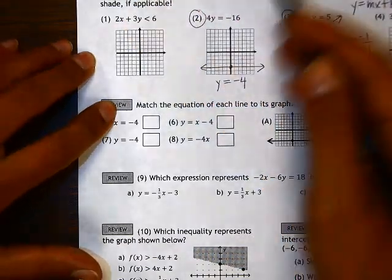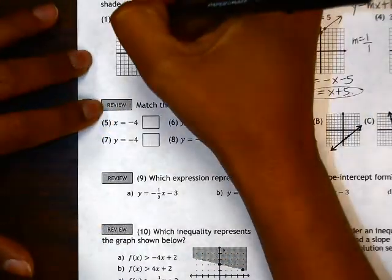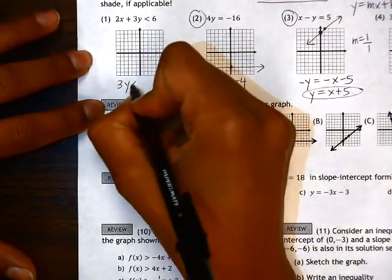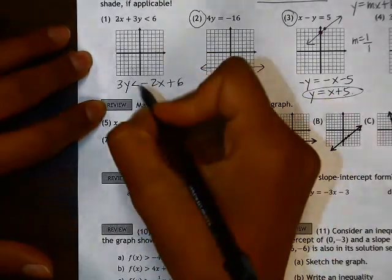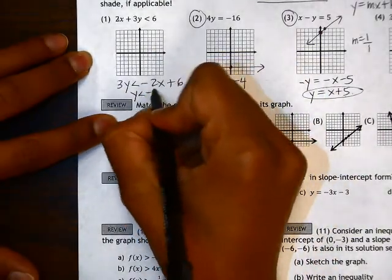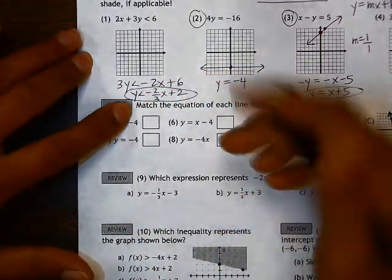So in number 1, we need to make sure we get this in slope-intercept form before we try to graph it. So I'm going to subtract 2x to the other side, and then divide by 3. Here we have the inequality in slope-intercept form.